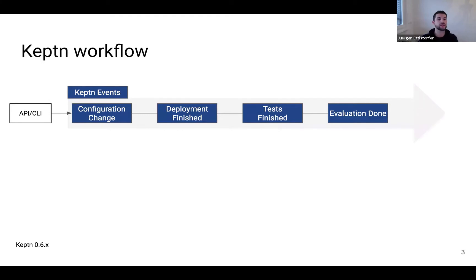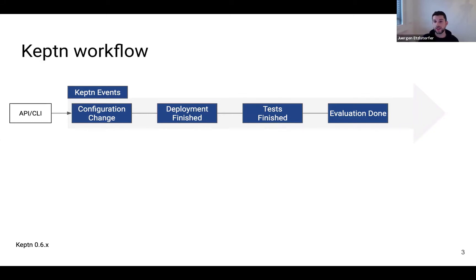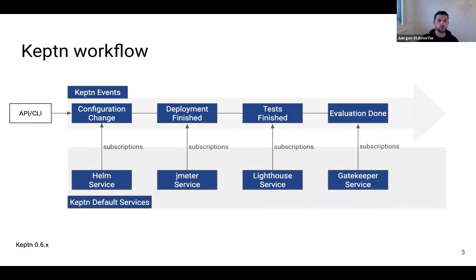Everything starts with an event that can be sent either from the Keptn API or CLI. It starts with a configuration change, and Keptn will start its internal workflow. It goes to a deployment — Keptn will start the deployment and move to the deployment finished event. It will start the tests, and the next event will be the tests finished event. At the very end comes the evaluation done event. Those are the main events in Keptn.